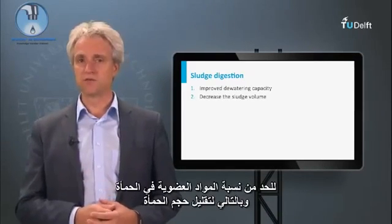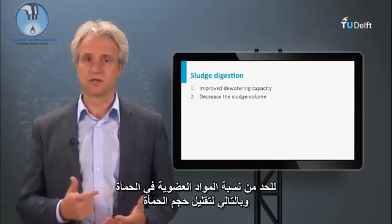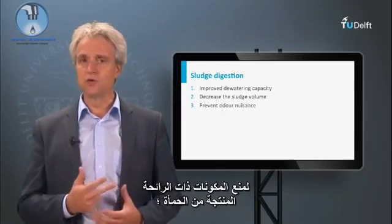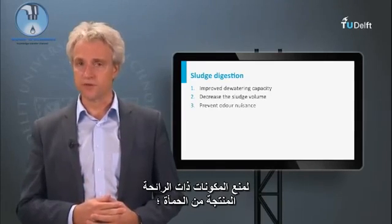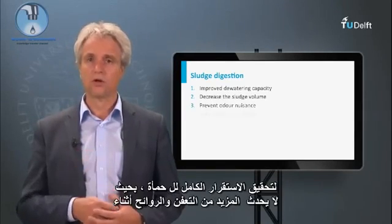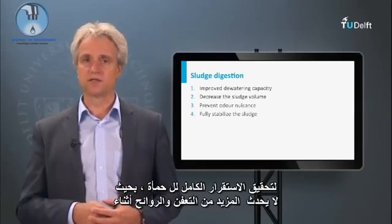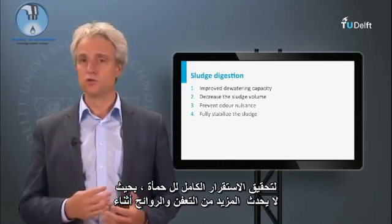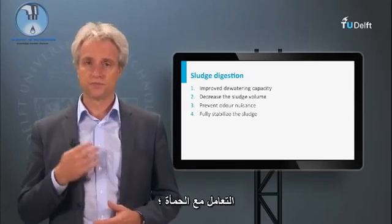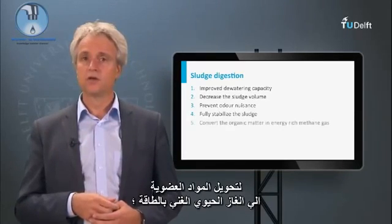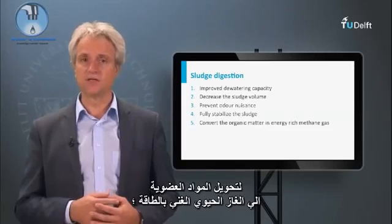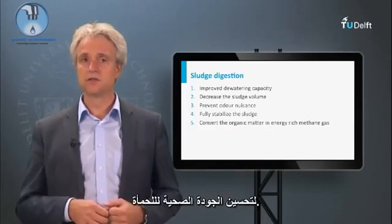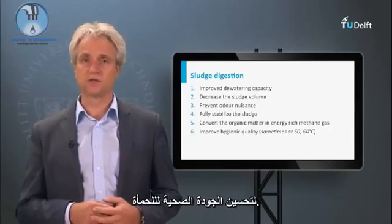Additional goals of sludge digestion include: reducing the organic fraction of the sludge and thus decreasing sludge volume; preventing production of odorous components; fully stabilizing the sludge so that no further putrefaction and odors occur during further handling; converting the organic matter into energy-rich biogas; and improving the hygienic quality of the sludge.